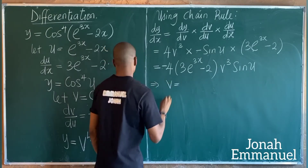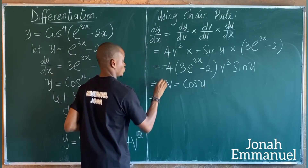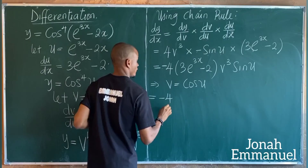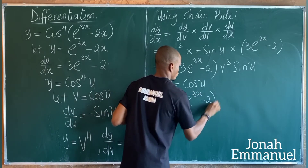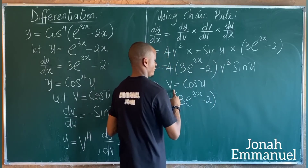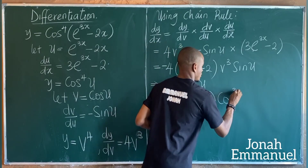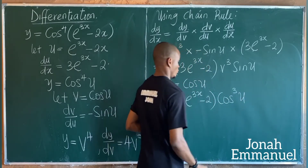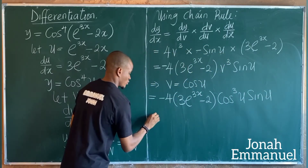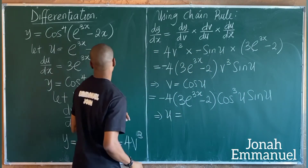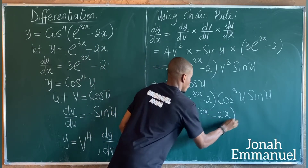Recalling that v equals cos u, v cubed becomes cos cubed u, also written cos to the power 3 of u. And u equals exponential 3x minus 2x, so the full answer is minus 4 times (3e^(3x) minus 2) times cos cubed(e^(3x) minus 2x) times sin(e^(3x) minus 2x).